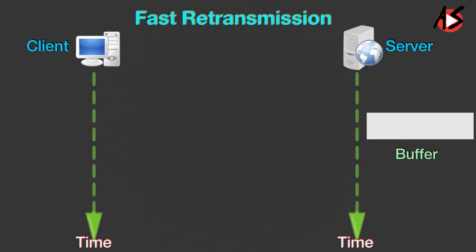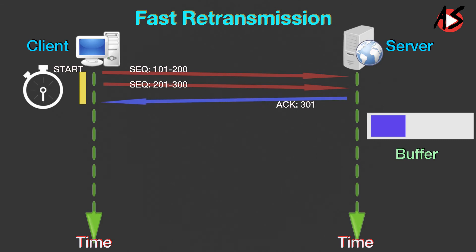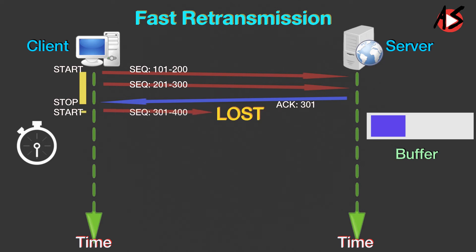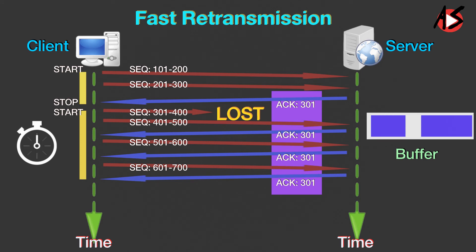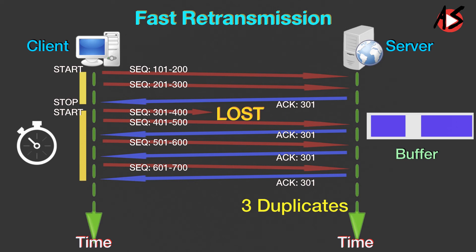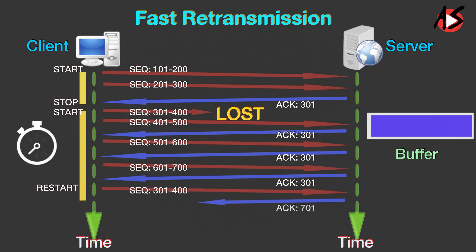Now we will understand fast retransmission. The client sends the first and second segments, the server sends acknowledgements. The client then sends the third segment, which may be lost during transmission. Each time the receiver receives the 4th, 5th, and 6th segments, it triggers an acknowledgement. The sender receives 4 acknowledgements with the same value — that is, 3 duplicate ACKs for the lost segment. Although the timer has not matured, the rule of fast retransmission requires that segment 3 be resent immediately, and then the timer is restarted.